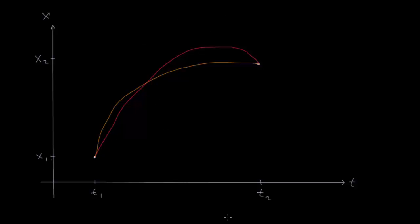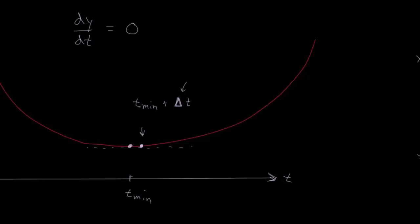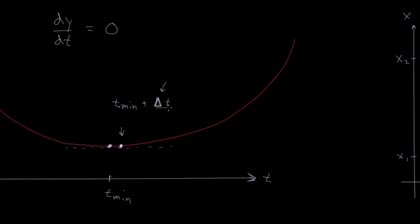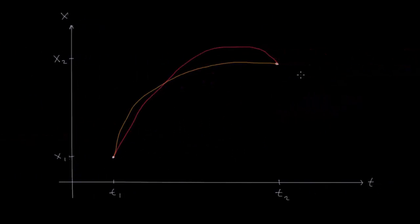So we can think of these two paths, maybe the pink path is t_min and the orange path is t_min plus delta t. So it's near to the true path but it's not quite the same. We can't think of it as just a difference in one value as we did before. If we want to think about the difference between these two paths, these paths actually have a difference at each point along t. So it's actually a function instead of just a single value.